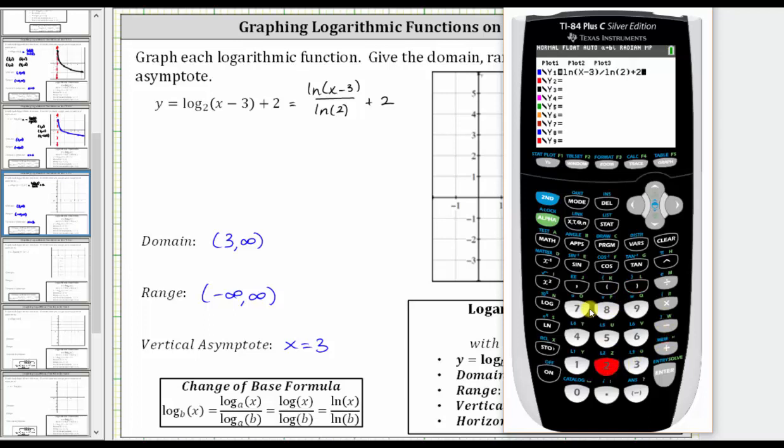Let's start with the standard window by pressing zoom six. Here we have a decent graph of the function, but because the domain is x greater than three, let's change the x-axis. Let's press window. Let's change the x minimum to negative two, and then press graph again.